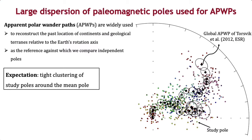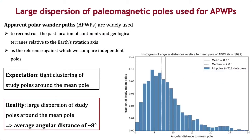APWPs are typically calculated by averaging a set of study poles that fall within a certain time window. In the absence of unrecognized errors, we would expect a tight clustering of these study poles around the mean pole. But in reality we observe a large dispersion of study poles around the mean pole.